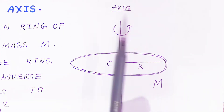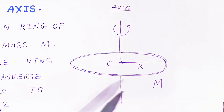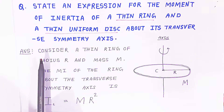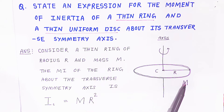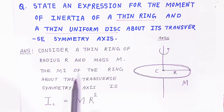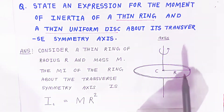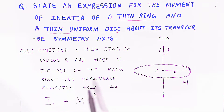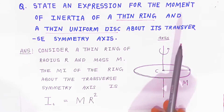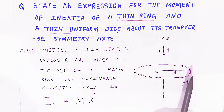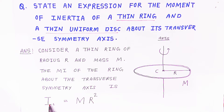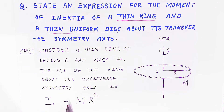This is the ring. So this part is called the transverse axis. If the ring is rotating transversely, what will be the moment of inertia of this thin ring? Consider a thin ring of radius R and mass M. It is rotating about this axis. The moment of inertia of the ring about the transverse symmetry axis is I = MR². This is very important if you want to solve the problem.